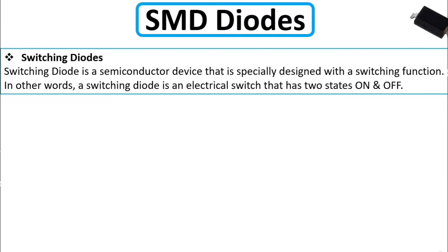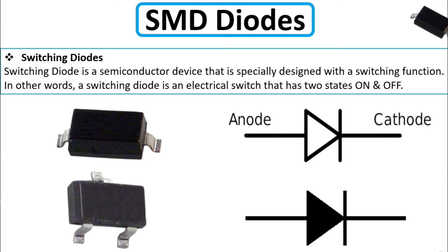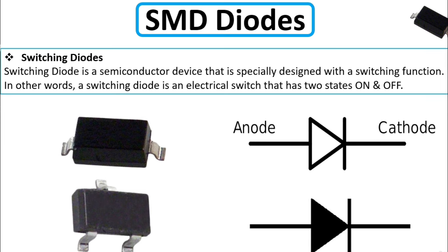The switching diode is a semiconductor device specially designed with a switching function. In other words, a switching diode is an electrical switch that has two states: on and off. You can find switching diodes looking like a normal diode, or you can find them with three pins.